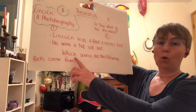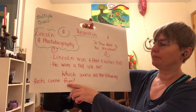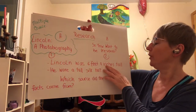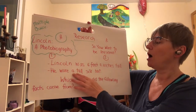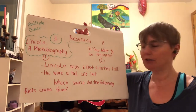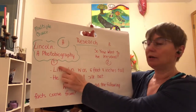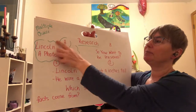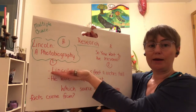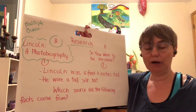Now, which source did the following facts come from? Lincoln was six feet four inches tall. He wore a tall silk hat. Do you remember? That's right — these two facts came from source number one. So your multiple choice between A or B, answer A is correct: Lincoln, A Photo Biography.